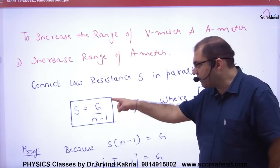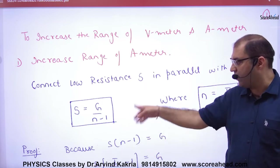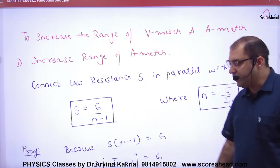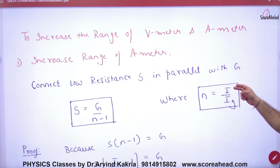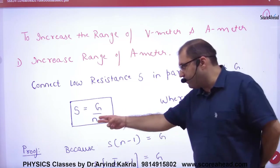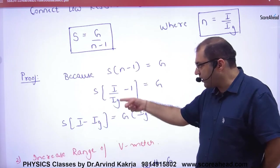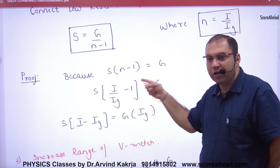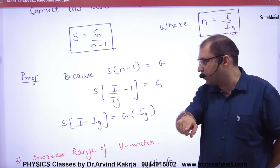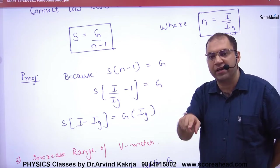Use this formula of shunt: G upon N-1, where N equals the range of ammeter. When we put it here and solve it, the shunt formula will be IG into G by I minus IG, which we have already derived.